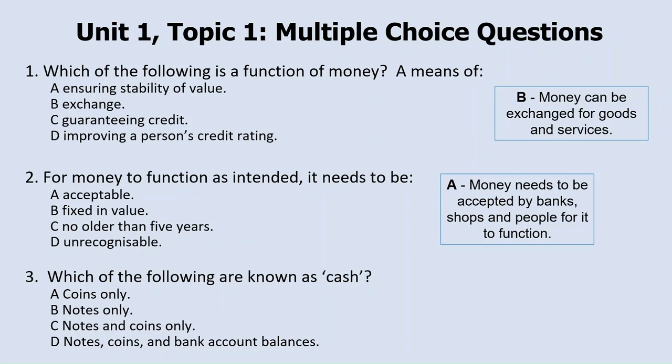And a third question: which of the following is known as cash? Is it a) coins only, b) notes only, c) notes and coins only, or d) notes, coins and bank account balances? The answer to question three is c. Whereas notes, coins and bank account balances are known as money, just notes and coins are known as cash.